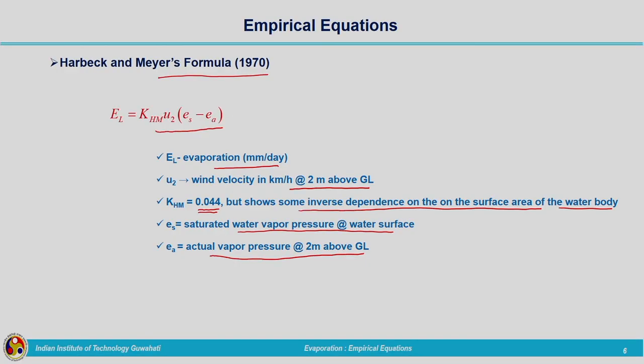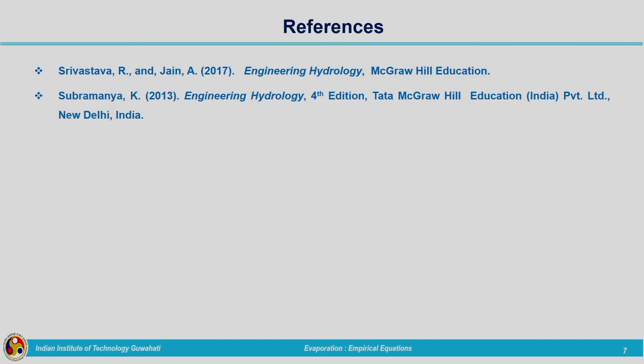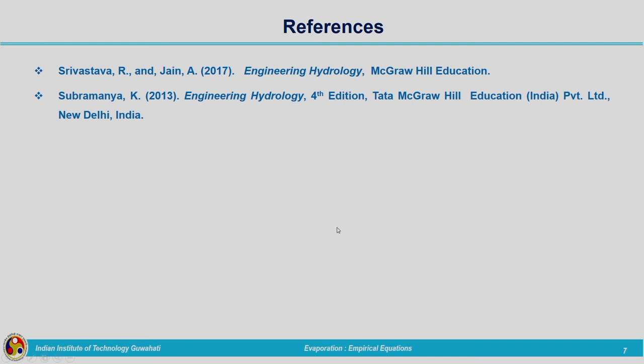These are the three empirical equations commonly used for calculating evaporation. Many other equations have also been derived using atmospheric parameters and modifications to existing equations, but I am not listing all of them here. With these three equations I am winding up the empirical equations related to estimation of evaporation. You can refer to the listed textbooks for more details about different empirical equations. That concludes the determination of evaporation using empirical equations.